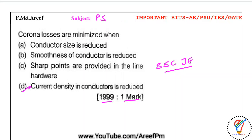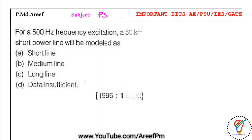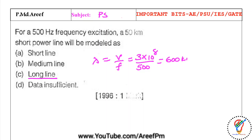For a 500 Hz frequency excitation, a 50-kilometer short power line will be modeled as a long transmission line. The wavelength is λ = v/f = 3×10⁸ m/s ÷ 500 Hz = 600 kilometers. Since the wavelength of 600 km is more than 160 km, we treat this line as a long line.